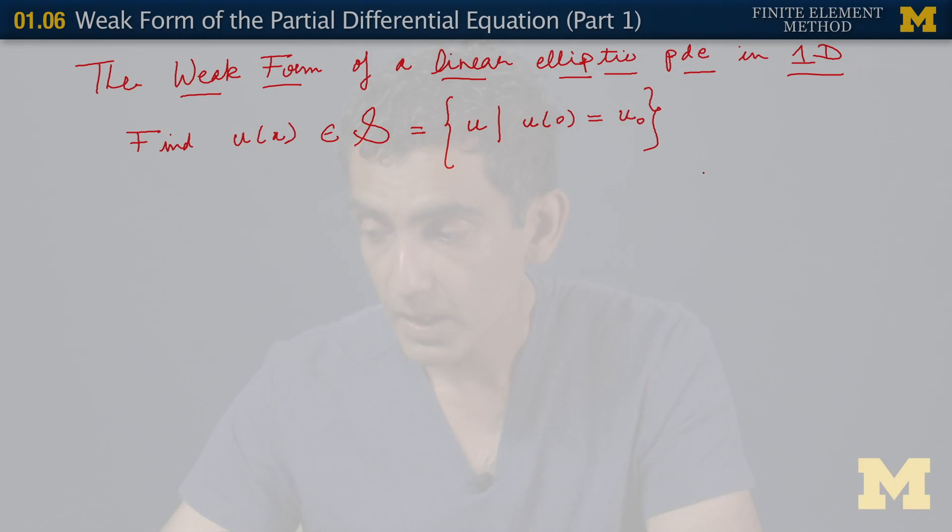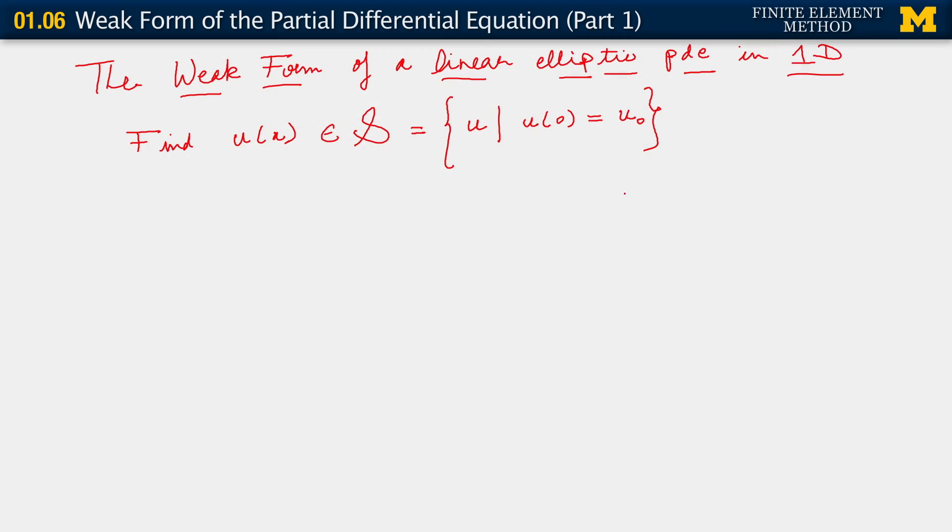It turns out to be a little cumbersome to develop the weak form for both cases, so I'm going to develop the weak form for a single Dirichlet boundary condition at x = 0. Later on, we will see what happens when we have Dirichlet boundary conditions at x = 0 and x = l. If we did have that, we would build that condition also into the space S.